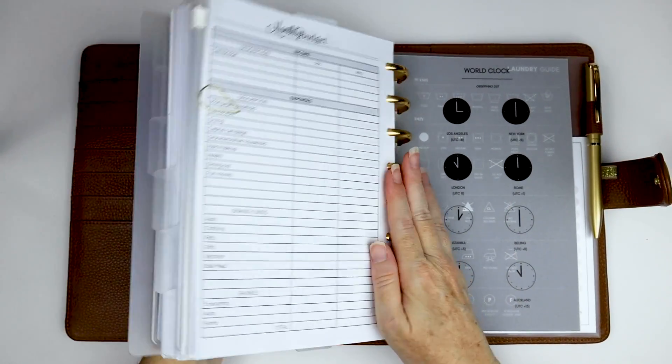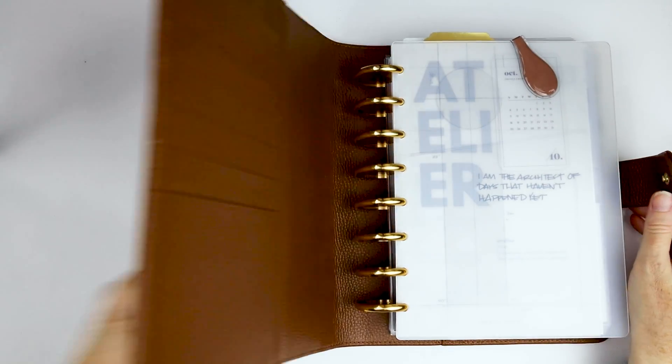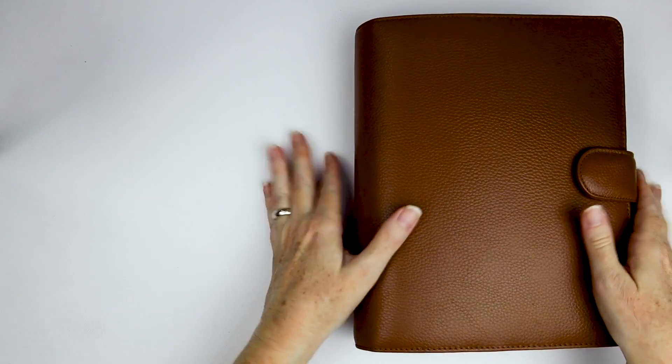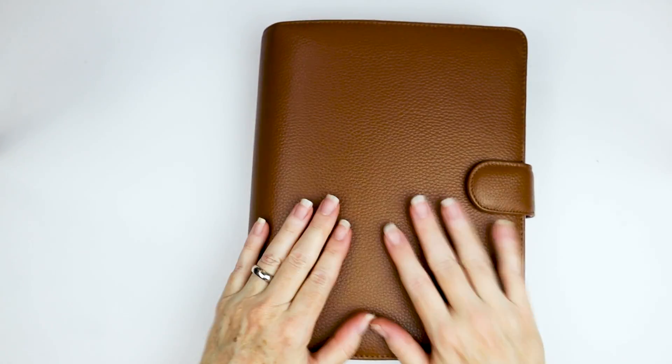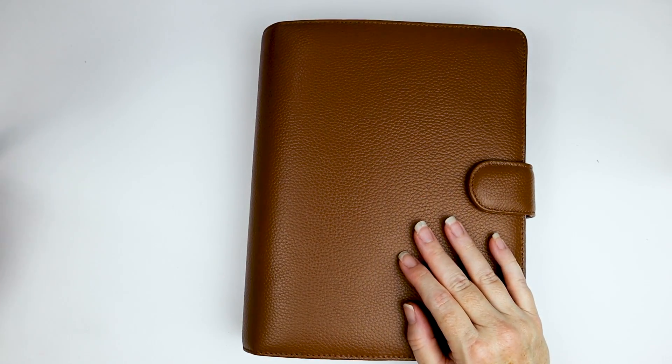So let me put this back here. All right, so that's my catch-all planner. So it is very thick. Like, it's inch and a half rings, and it's full. Like, there's not really much room that I can add stuff to this. But that's okay because it makes it easier to write on since I'm left-handed. So I don't mind it being thick.